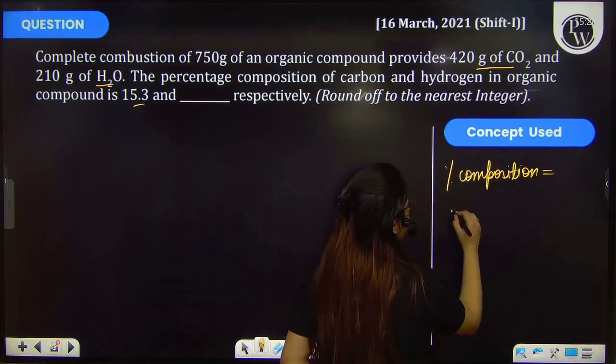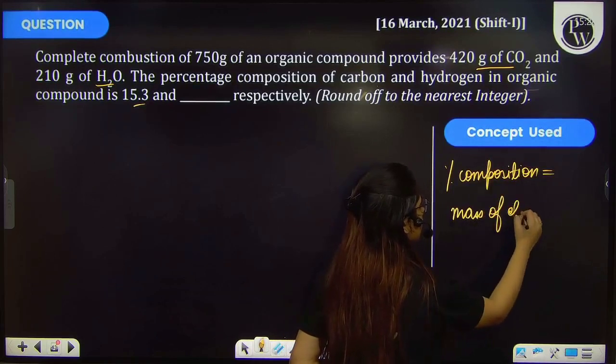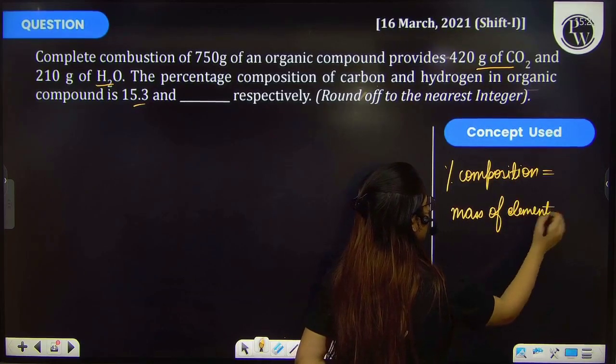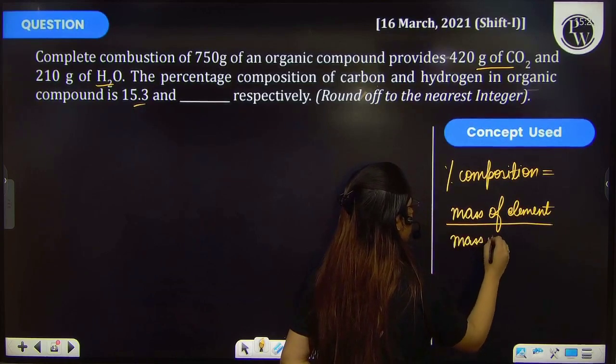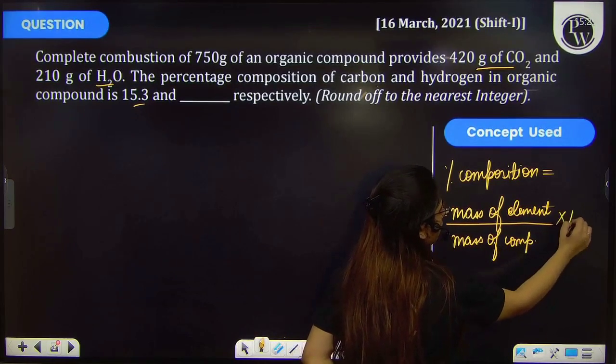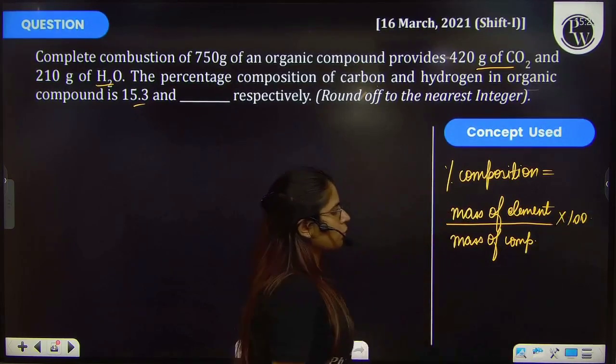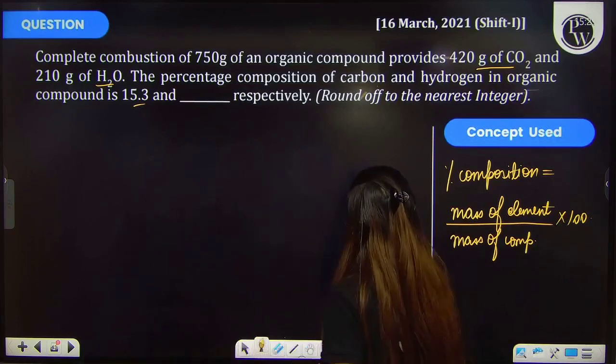Percentage composition equals the total mass of that particular element divided by the total mass of the compound, multiplied by 100. Using this concept, we'll calculate the percentage of hydrogen in this organic compound.